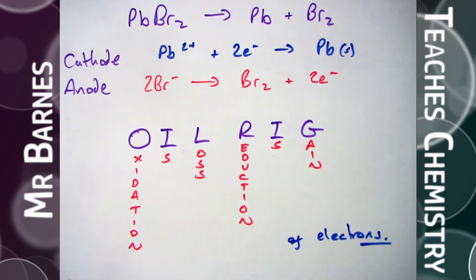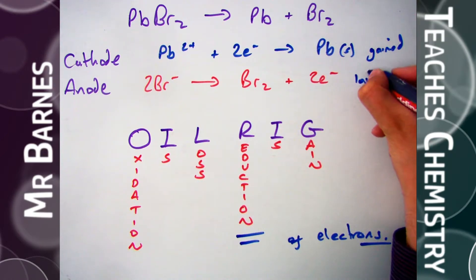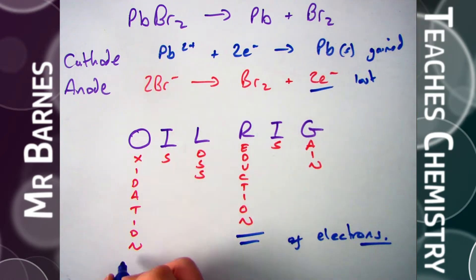So if we have a look at the example that you've seen in a previous video, where lead bromide is electrolyzed to form lead and bromine. At the cathode, Pb2+ gains two electrons to become lead, and at the anode, your two bromide ions lose electrons to become Br2.